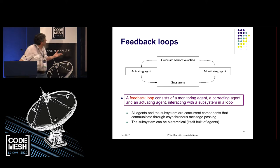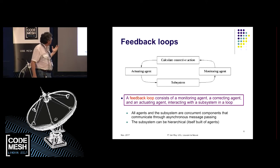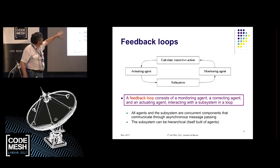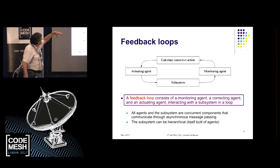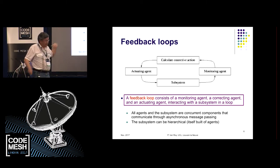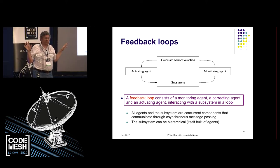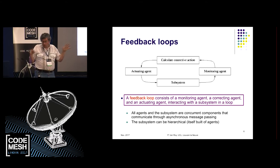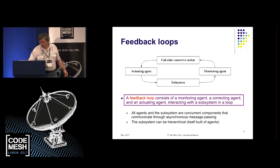A feedback loop is my primitive element — a very simple thing. I have a subsystem, which could be any kind of system. It's monitored by a monitoring agent. There's an agent that calculates a corrective action to take, and an actuating agent that does things. These are all concurrent components sending messages, very similar to Erlang-style process communication. The subsystem can itself be hierarchical.